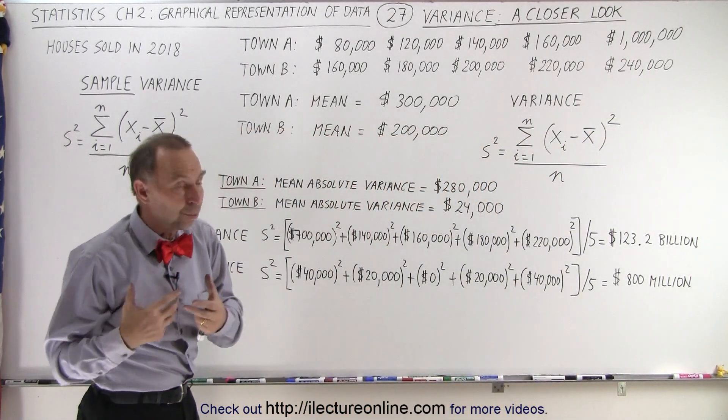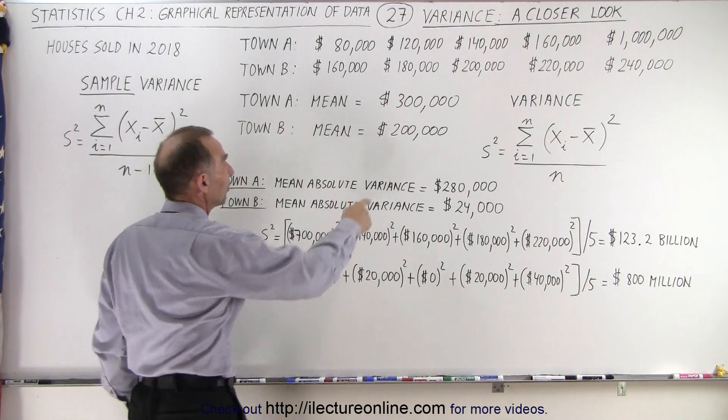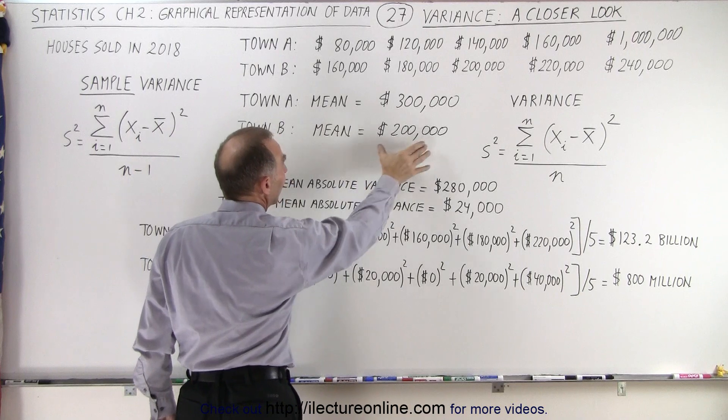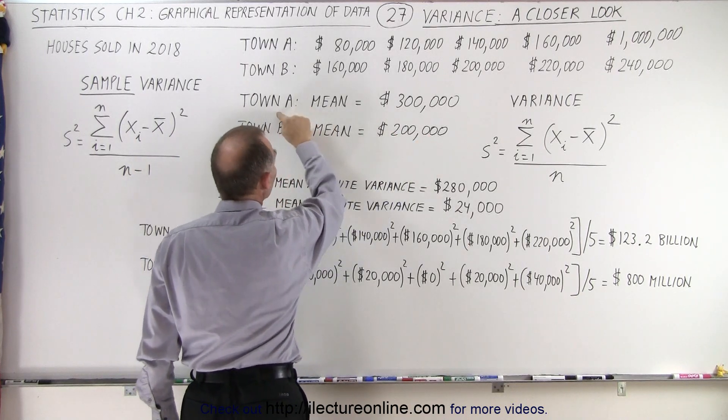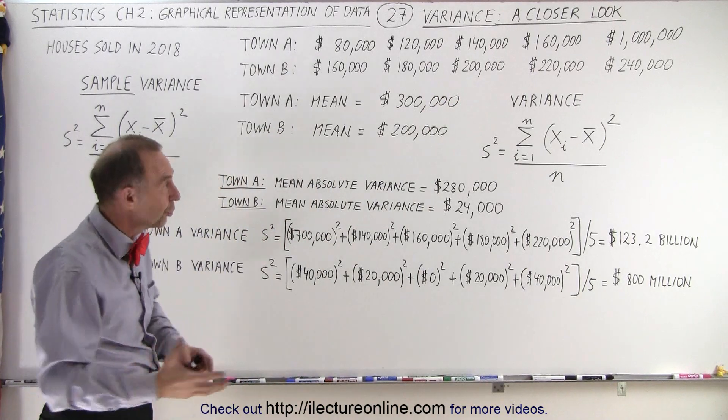In town B, the mean represented more closely the typical house price. And you can see that therefore the average for town B has a lot more meaning than the average for town A because the one expensive house really skewed the mean.